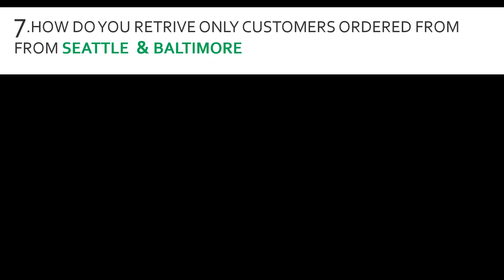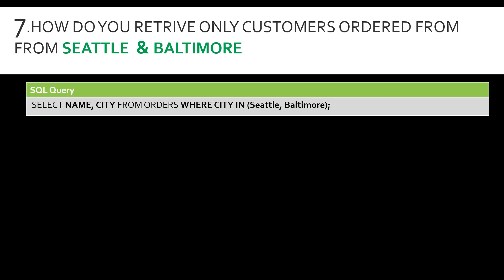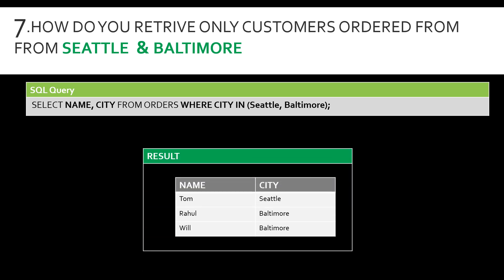Question number seven: how do you retrieve only customers who ordered from Seattle and Baltimore? This covers how to handle multiple specific values using the IN syntax. The query is SELECT name, city FROM orders WHERE city IN ('Seattle', 'Baltimore'). This returns the records of customers who ordered from either Seattle or Baltimore.